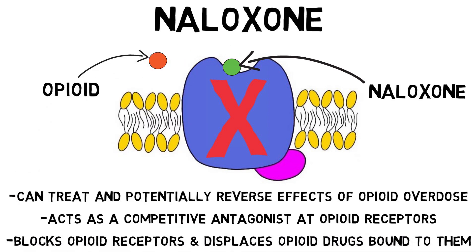This combination of receptor blockade and removal of active opioid drugs makes naloxone capable of reversing an opioid overdose and reducing the risk of complications associated with one.